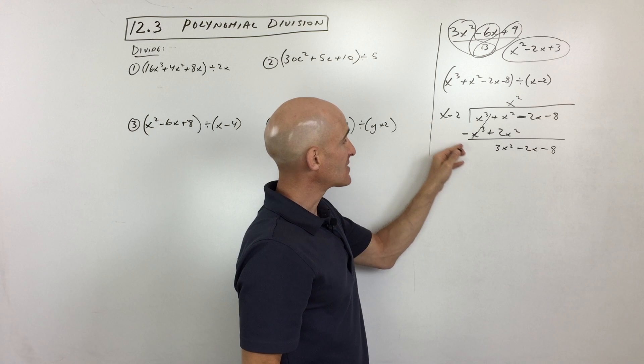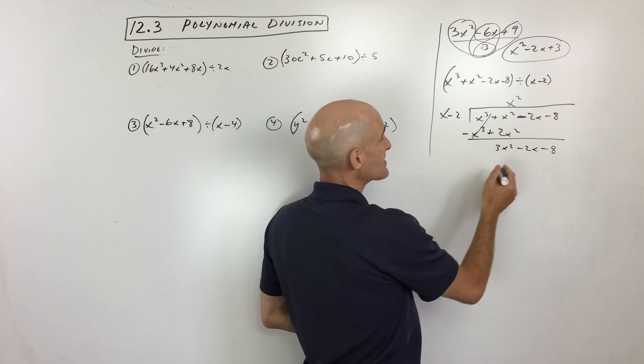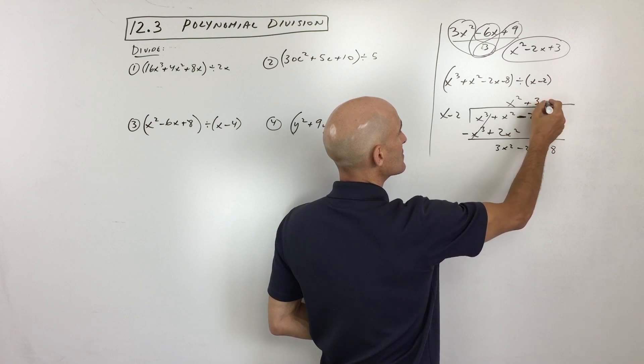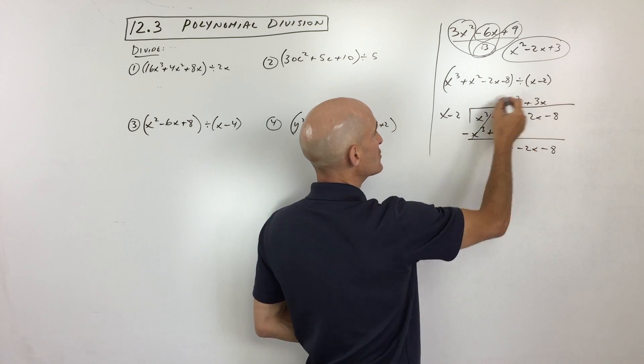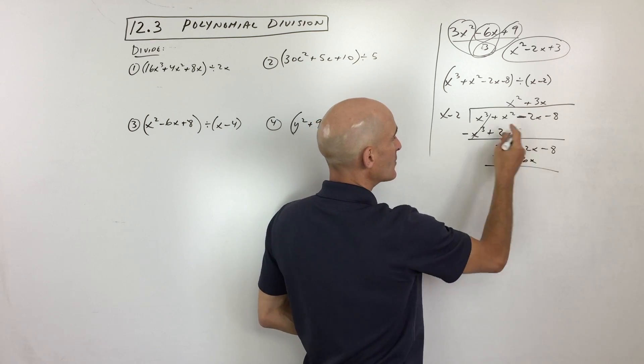Again, we say, how many times does x go into this first term, 3x squared? Well, 3x squared divided by x is 3x. So then we take the 3x and we distribute to both these two terms, and we subtract.